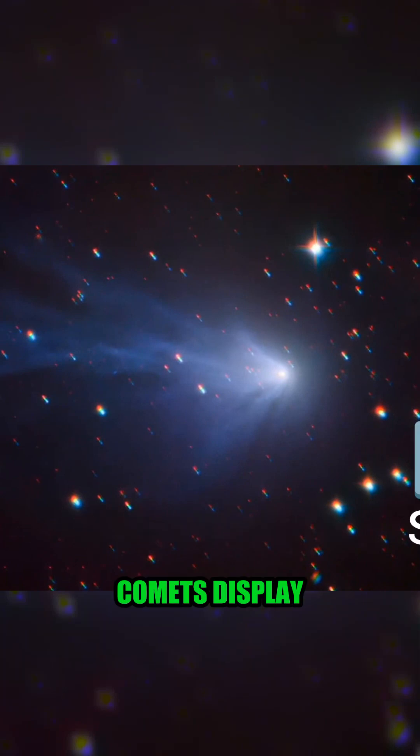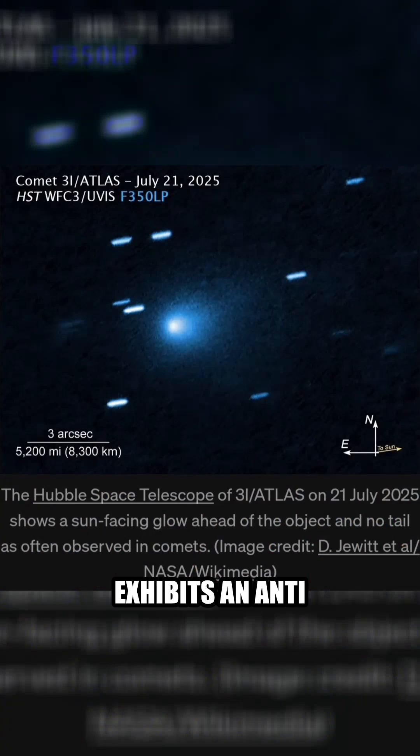As a result, comets display tails of reflected sunlight that point away from the sun, but 3I Atlas exhibits an anti-tail.